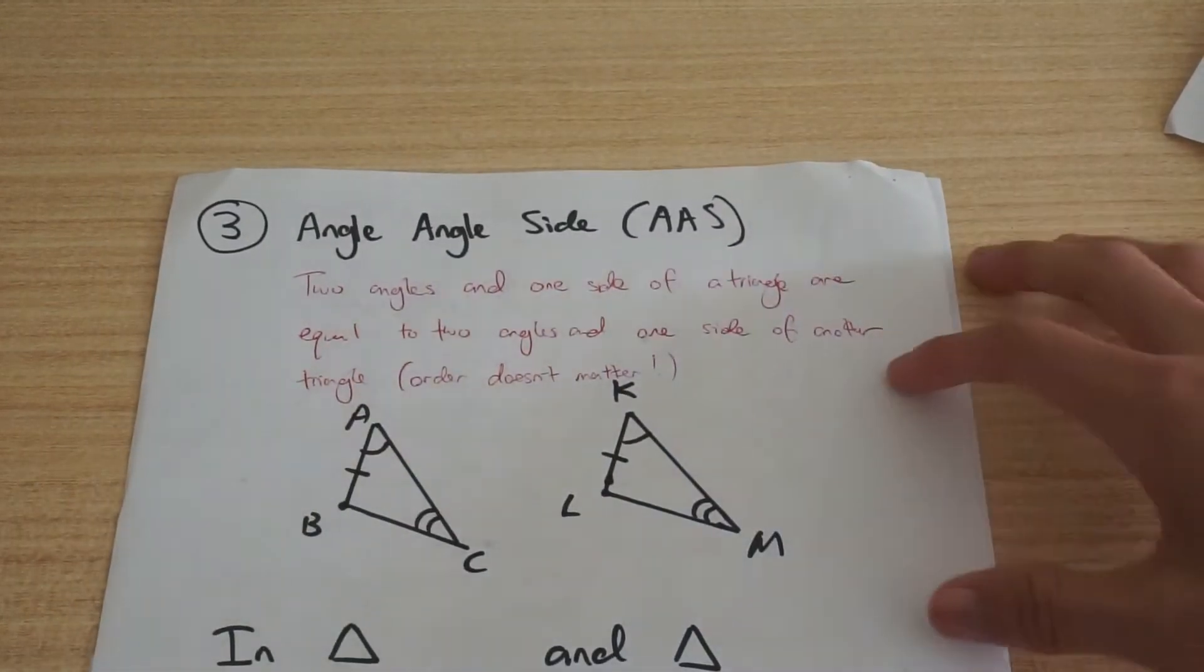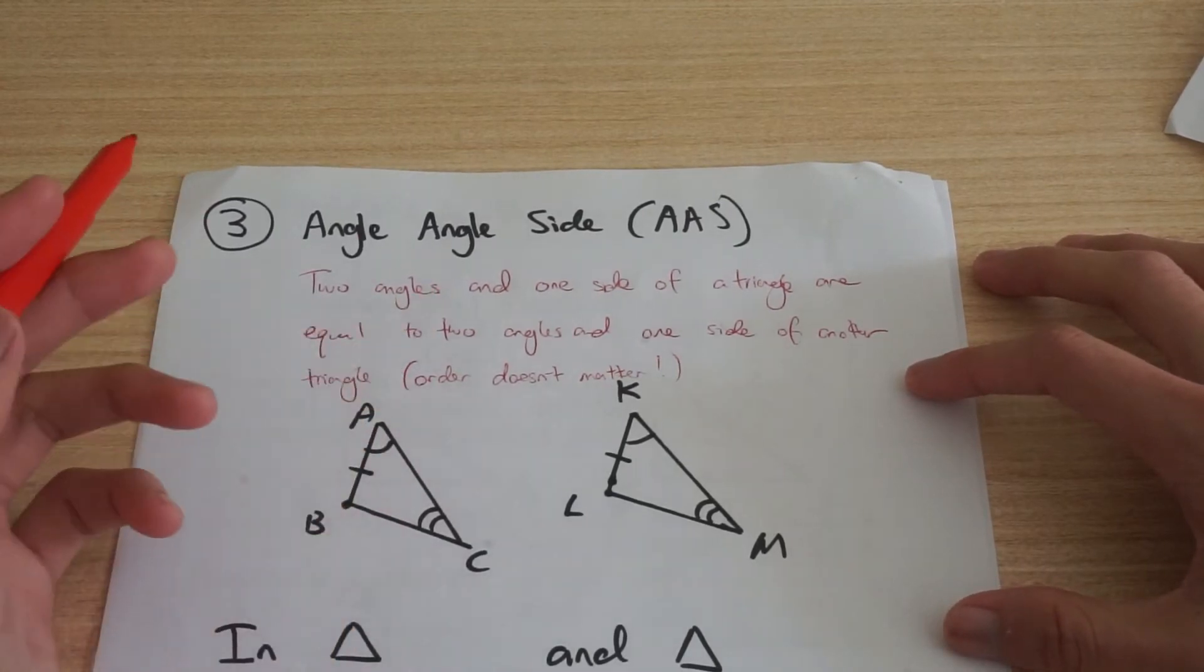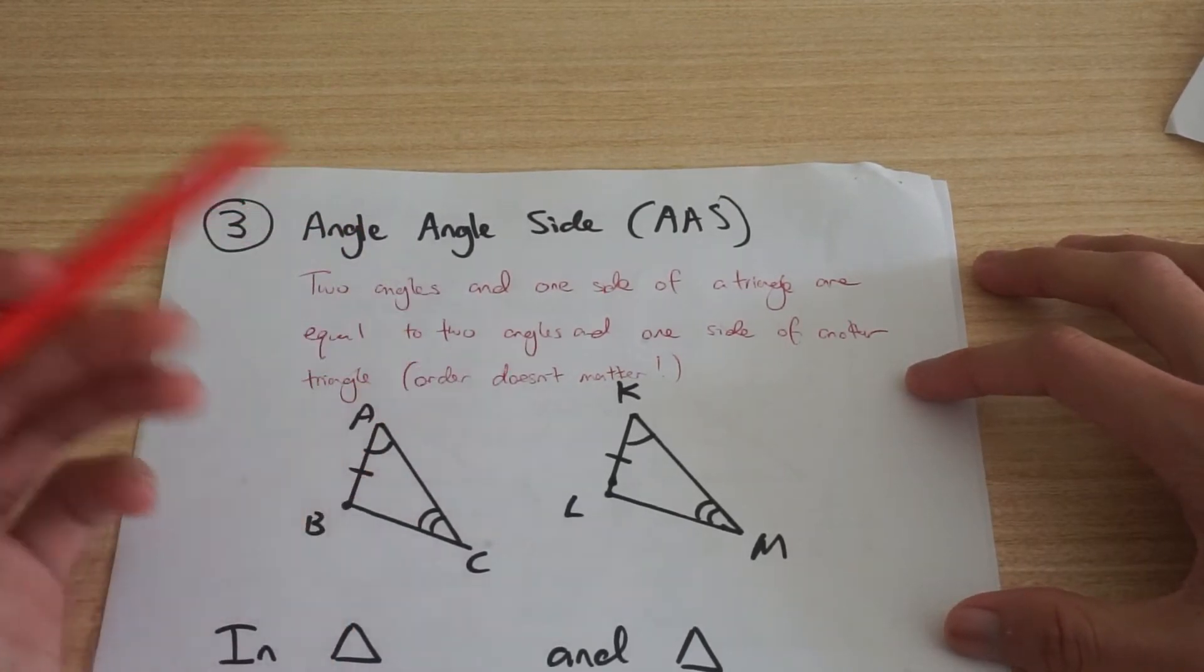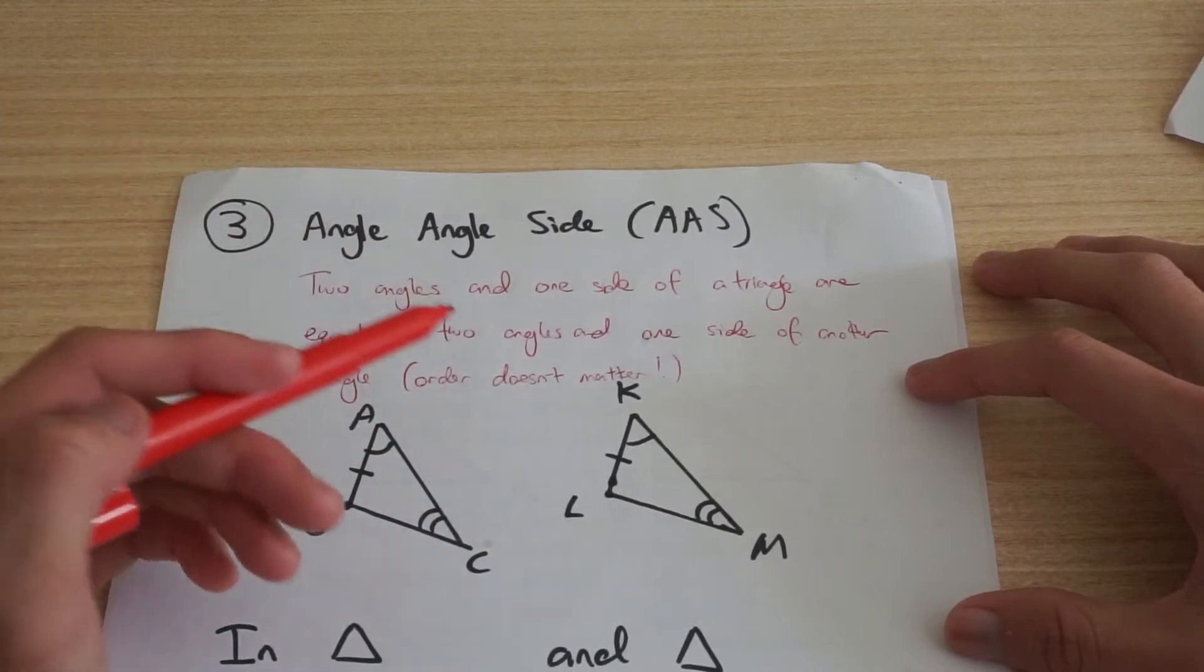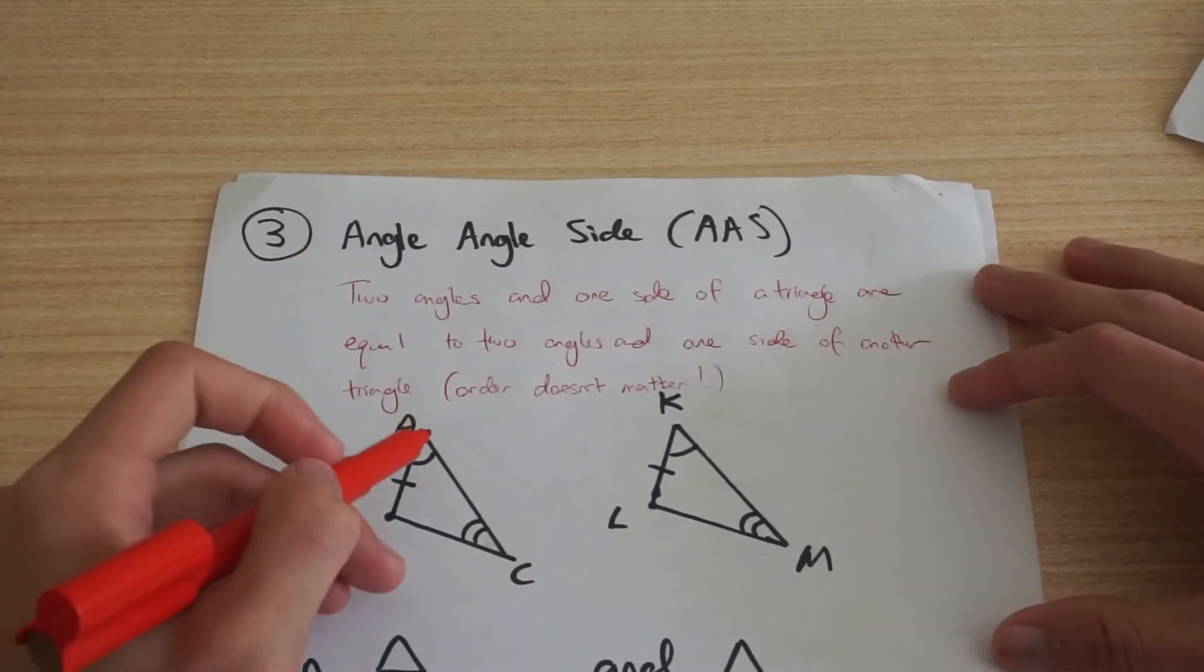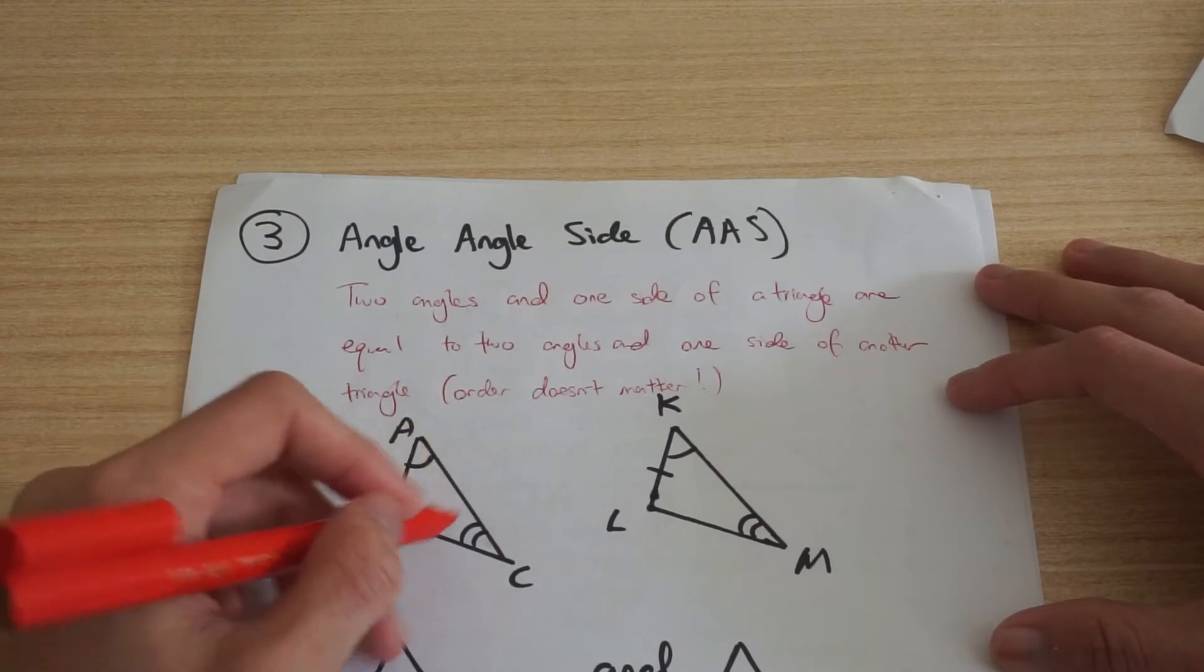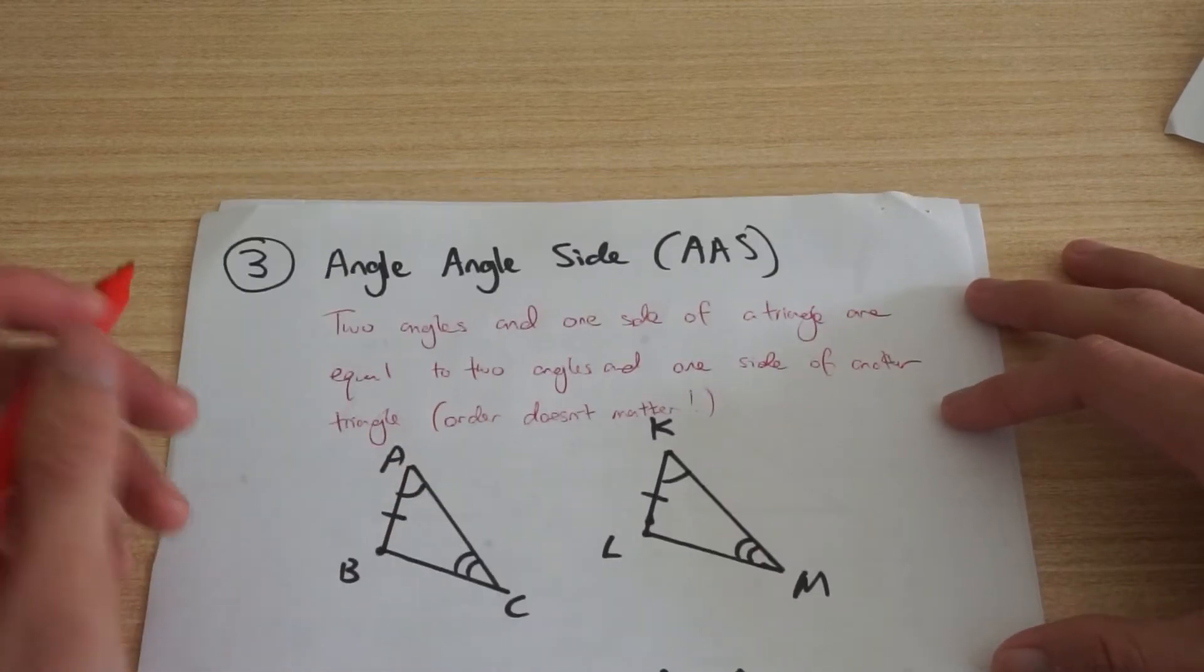The next one angle angle side and this is where two angles and one side of triangle equal to two angles of another and another side of another and in this one order doesn't matter and so you can have two angles here and two angles here but that side can be anywhere so there's no restriction on that one.